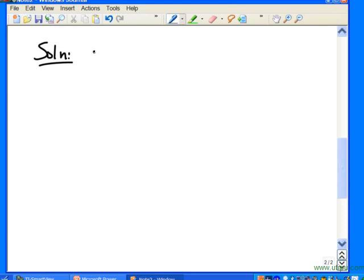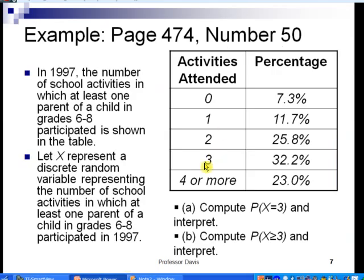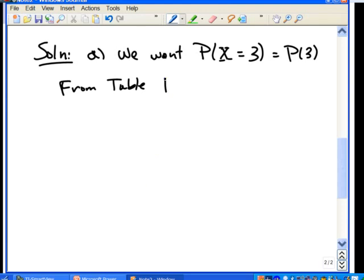So let's go ahead and find a solution for that now. So for part A, we want the probability that our random variable X is equal to 3. We can just write P of 3 for that if we'd like. Well, from the table, it doesn't get much easier than this. If we simply take a look at the table there, the value at 3 is 32.2.